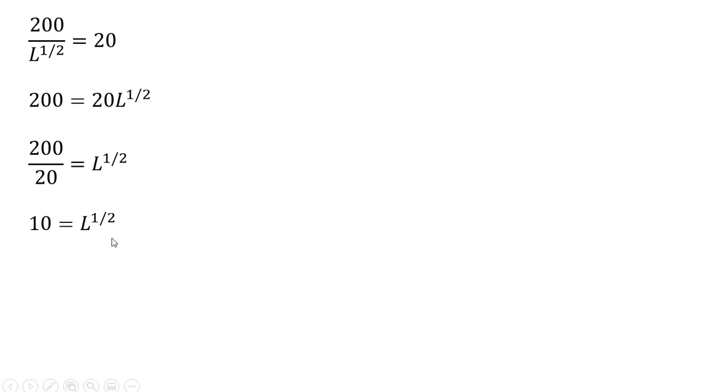200 divided by 20 gives us 10. And now we need to square both sides. To get rid of this L to the one-half, we need to square both sides. And L equals 100. That is the profit-maximizing level of employment for this perfectly competitive firm.